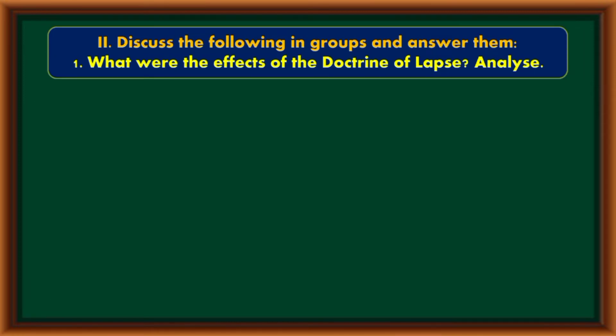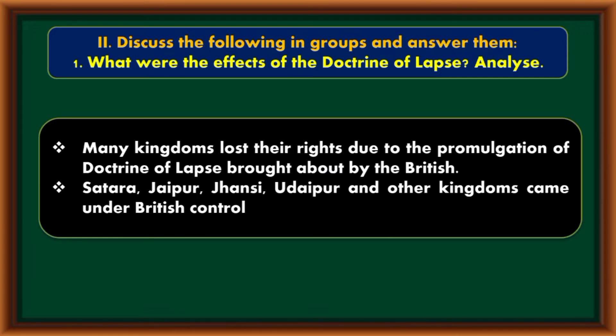Second main: Discuss the following in groups and answer them. What were the effects of the Doctrine of Lapse? Many kingdoms lost their rights due to the promulgation of the Doctrine of Lapse brought out by the British. Satara, Jaipur, Jhansi, Udaipur and other kingdoms came under British control.